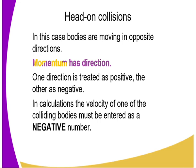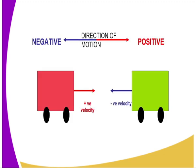In calculations, the velocity of one of the colliding bodies must be entered as negative number. For instance, in the diagram here, we have two bodies which are colliding head-on.